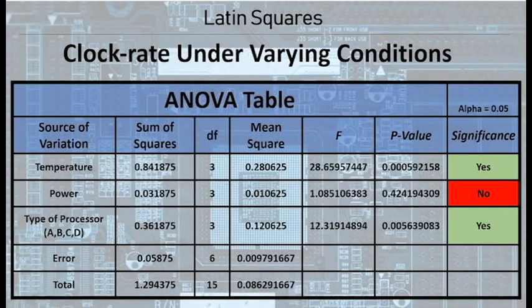Judging from the data presented in our ANOVA table, temperature and the type of processor appears to have a much greater impact on the overall clock rate of a processor. The power expended by the processor doesn't cause a significant change in the clock rate.